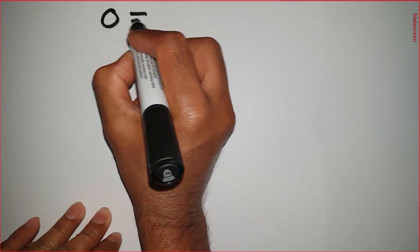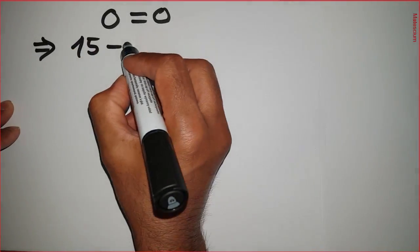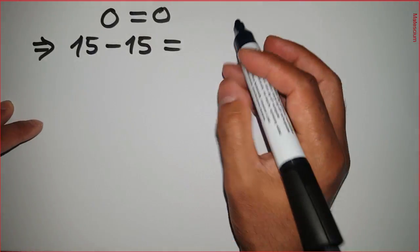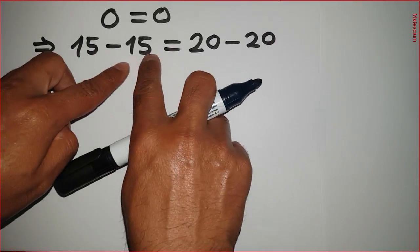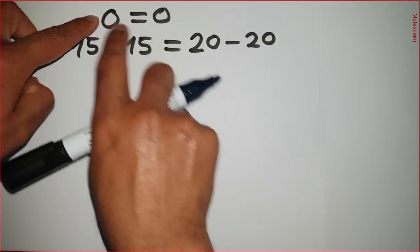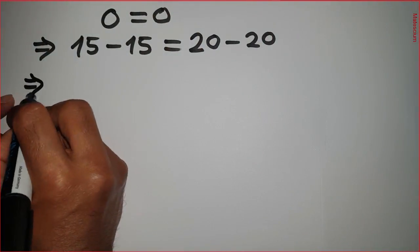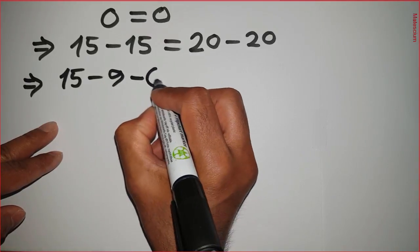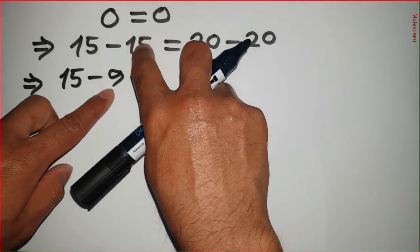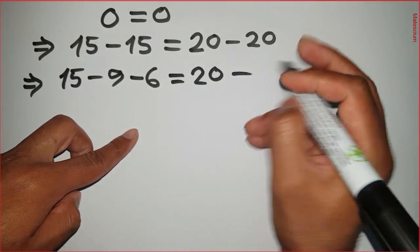I have another way to prove 3 plus 3 is equal to 7. Let's consider 0 equals 0. On the left-hand side, this 0 can be rewritten as 15 minus 15, and on the right-hand side, 0 can be written as 20 minus 20. Because 15 minus 15 equals 0 and 20 minus 20 equals 0, there is no mathematical contradiction. Now, rewriting: 15 can be written as minus 9 minus 6, meaning minus 9 minus 6 equals minus 15 — I just redistributed 15.